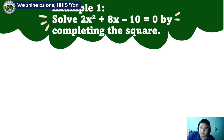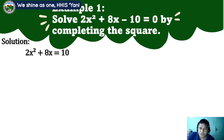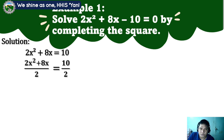Let's have an example. Solve 2x squared plus 8x minus 10 equals 0 by completing the square. Solution: we have 2x squared plus 8x equals 10. We have to transform that into ax squared plus bx equals c. Then we divide both sides by 2, since a is equal to 2. That is step 2. So we have x squared plus 4x equals 5.